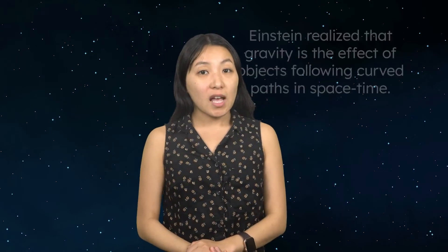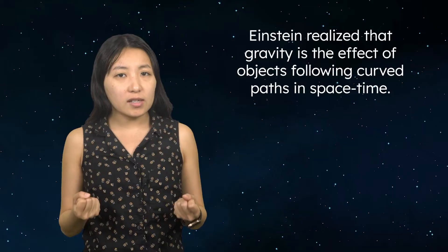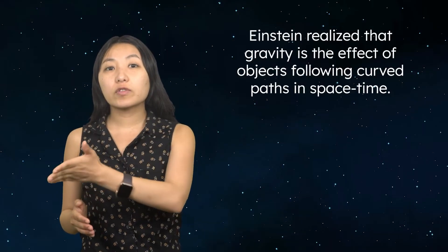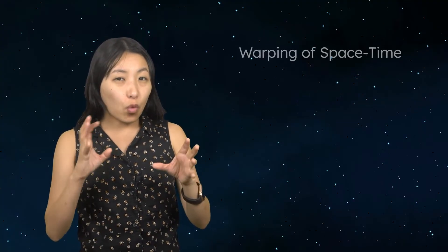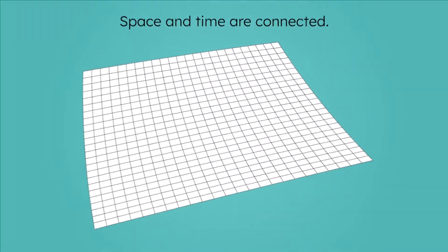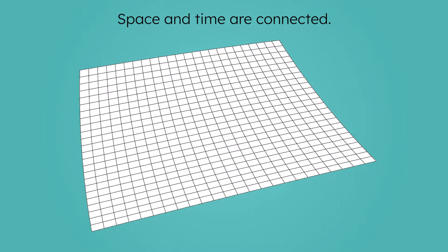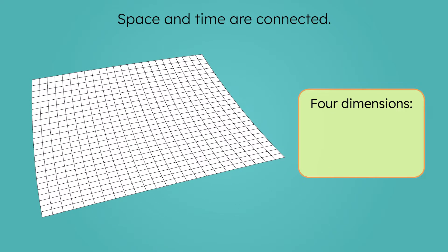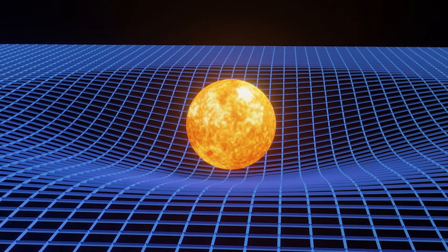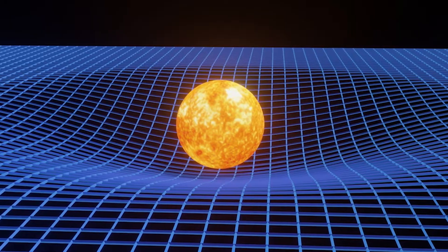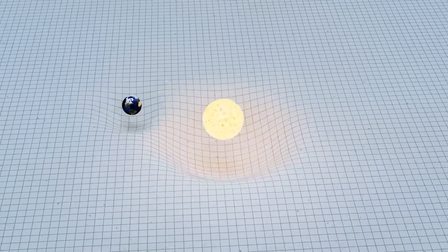In simpler terms, Einstein realized that gravity isn't a force pulling objects — it's the effect of objects following curved paths in space-time. This brings us to the second key idea: the warping of space-time. Einstein showed space and time are connected, forming a four-dimensional fabric we call space-time. Start with the three dimensions you're familiar with — length, width, and height — then add a fourth dimension: time. Together, these create space-time. Massive objects, like the Sun, create dents or warps in this fabric, and smaller objects like planets follow these curves.